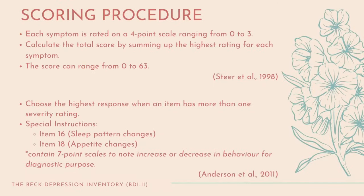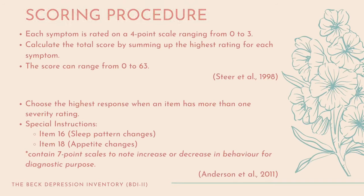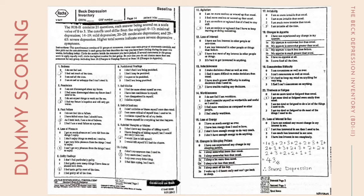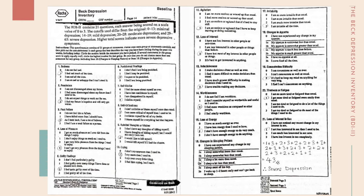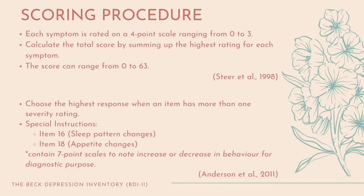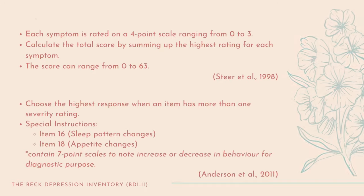Scoring procedure: Each symptom is rated on a four-point scale ranging from 0 to 3. Calculate the total score by summing up the highest rating for each symptom. The total score can range from 0 to 63. Choose the highest response when an item has more than one severity rating.